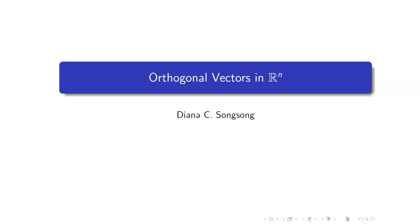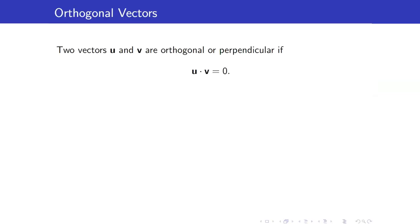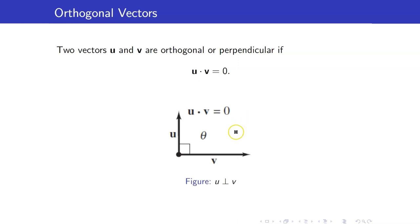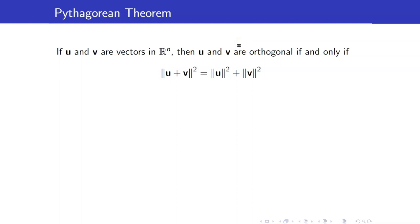In this lesson, I am going to discuss orthogonal vectors in Rn. Two vectors u and v are said to be orthogonal or perpendicular if the dot product between u and v is equal to 0. We have seen this in our last video lecture. The next theorem tells us a sufficient and necessary condition for two vectors to be orthogonal: two vectors are orthogonal if and only if they satisfy the Pythagorean theorem — the magnitude of u plus v squared equals the square of the magnitude of u plus the square of the magnitude of v.